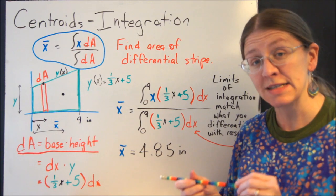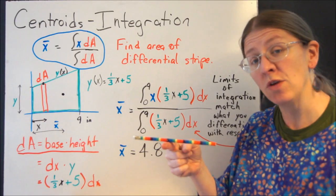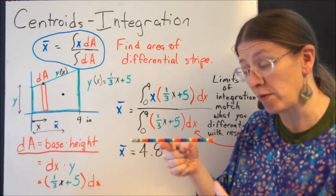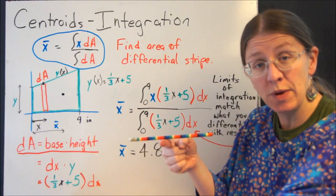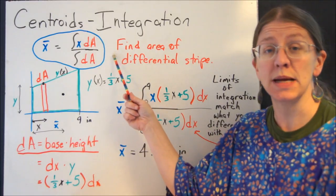Last time we looked at finding the centroid of an area. We talked about balancing your pencil on your finger so that you have the same amount of moment over here from the weight as a moment over there from the weight. We talked about equivalent systems, and we've sort of derived this basic formula.